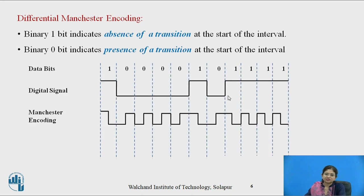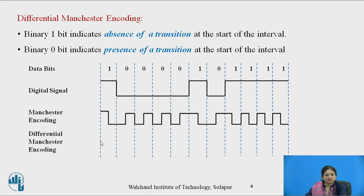Let us see this with the help of the same example. The data is 1 0 0 0 0 1 0 1 1 1 1. For a one bit, there is a high-to-low signal but no transition at the start of the interval. For zero there is a presence of transition at the start of the interval, shown as low-to-high.